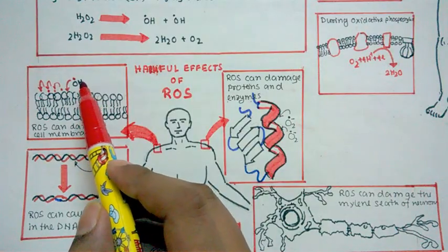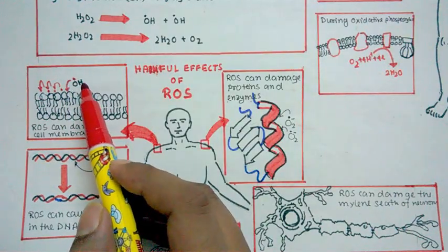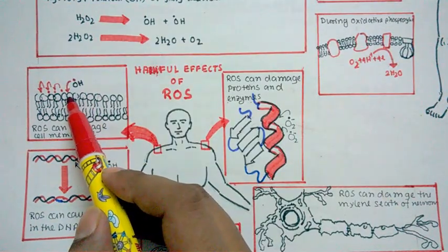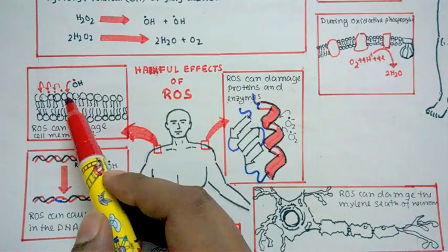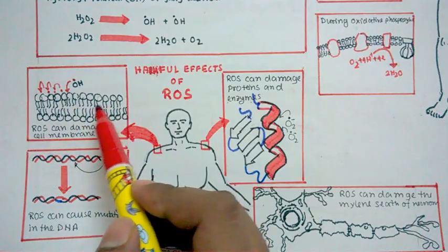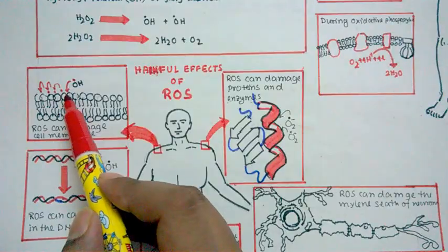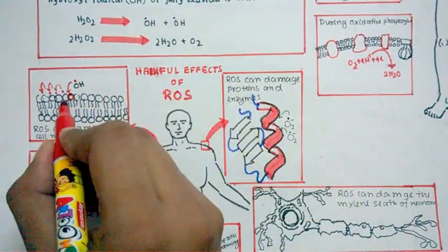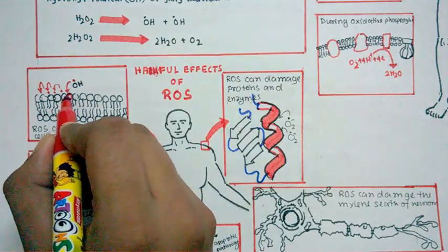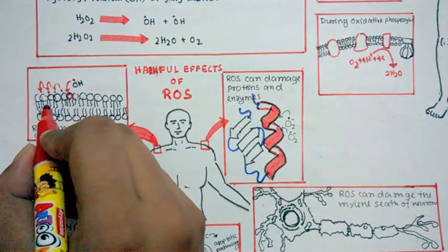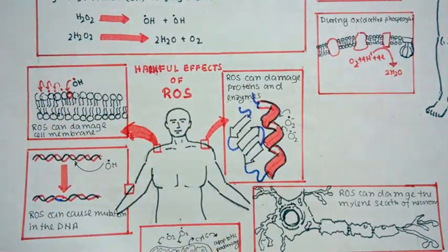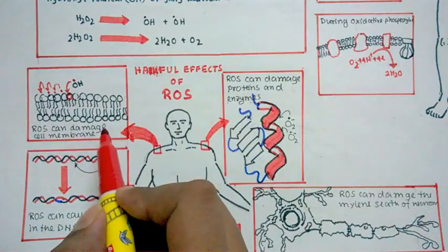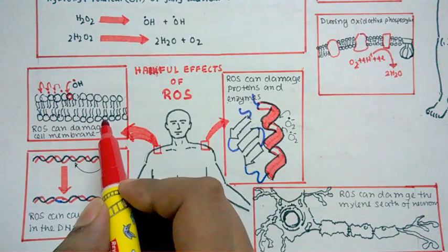And here we have drawn a hydroxyl radical. Hydroxyl radical has one electron extra, so it wants to gain stability and it can donate its electron to a nearby lipid molecule of the bilayer. And then what happens? This particular lipid molecule gets reactive, then it transfers its electron to the nearby one, and then a chain reaction kind of thing takes place.